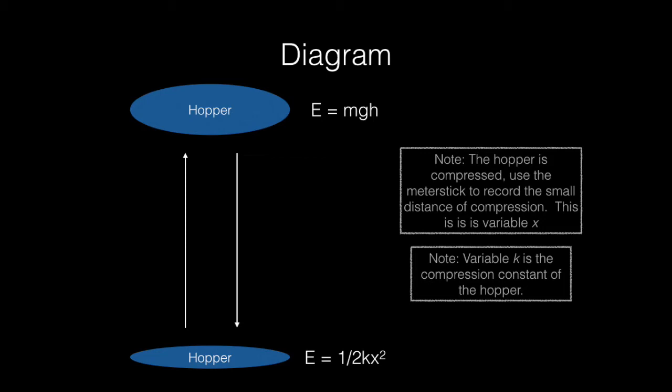Once the hopper flies into the air and stops at its highest point, the energy of compression has been converted into gravitational potential energy. Students should measure the compression of the hopper for variable x and the displacement of the hopper for variable h.